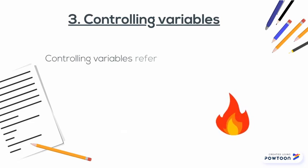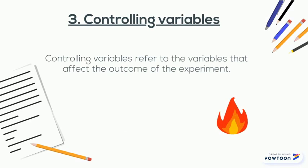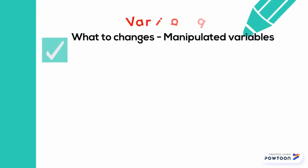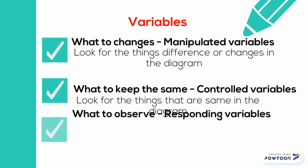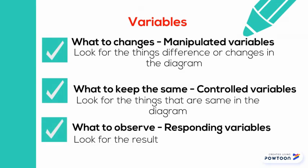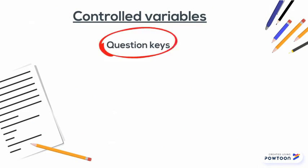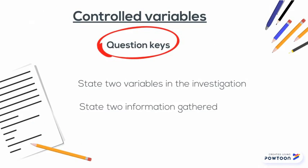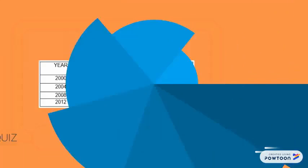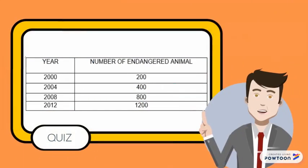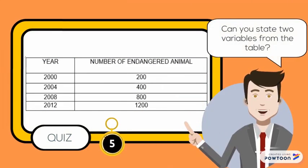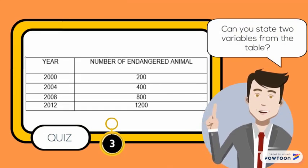Number three, controlling variables. Controlling variables refer to the variables that affect the outcome of the experiment. Quiz: can you identify two variables from the table?